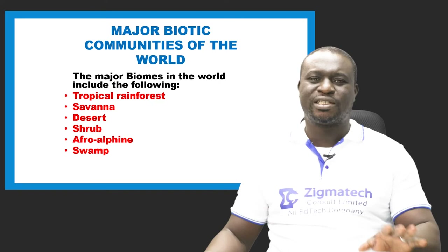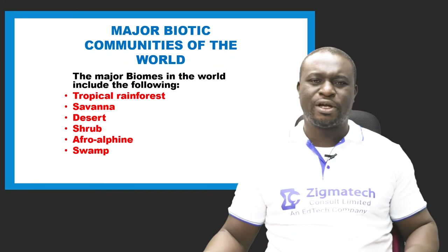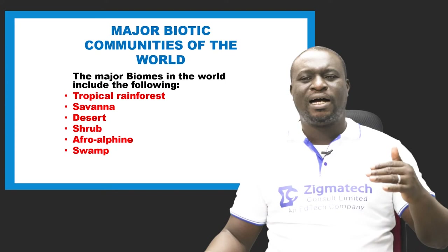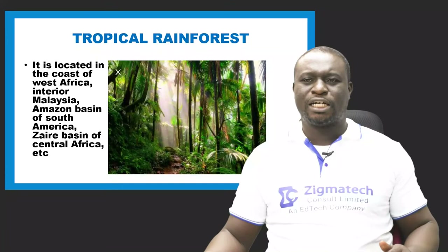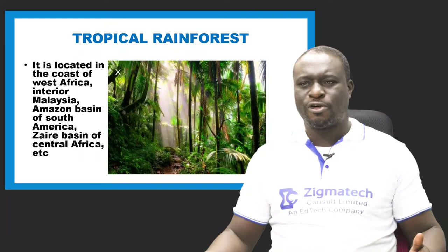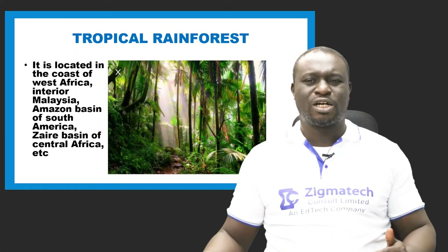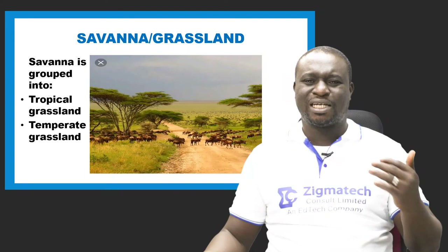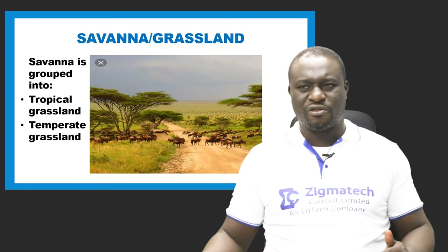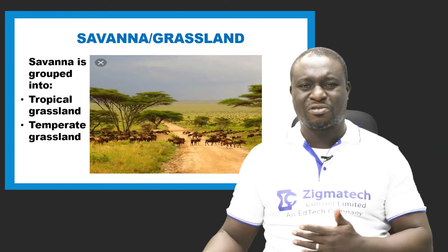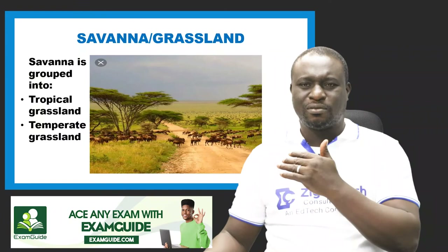Now let's look at major biotic communities in the world: tropical rainforest, savannah, desert, shrub, afro-alpine, and swamp. The tropical rainforest can be found in West Africa, interior Malaysia, the Amazon basin of South America, and the Zaire basin of Central Africa. Savannah — also called grassland — goes by other names such as Llanos and Pampas in different countries.